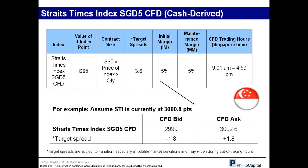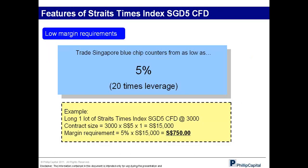For the Straits Times Index $5 CFDs, you only require a 5% margin. Trading starts at 9:01am and ends at approximately 4:59pm. The spread is kept at 3.6 points and you receive a bid and ask price. At a 5% margin, to trade the full basket of 30 STI stocks: if the STI is at 3,000 points at $5 per point and you trade one contract, the contract size is $15,000 — and at 5%, you only need $750 to gain exposure to all STI component stocks.